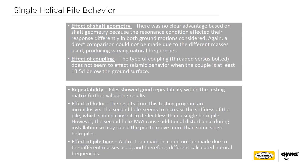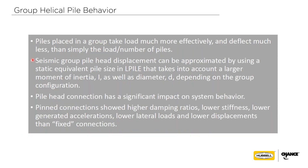After the video: the tests found no clear geometric advantage between round and square cross-sections in these tests. The couplings were well below grade and didn't show much effect. The effect of the helix was inconclusive at this depth. Piles in a group take load more effectively and deflect less, which makes intuitive sense. The seismic group head displacement can be approximated with L-Pile or other software. The connection of the pile head is very important — pin or fixed — with pin connections showing slightly higher damping ratios due to lower stiffness.